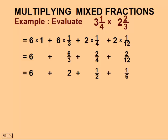We can reduce fractions. 6 thirds divided by 3 is 2. 2 quarters is the same as 1 half. And 2 twelfths, if we divide the top and bottom by 2, is the same as 1 sixth.